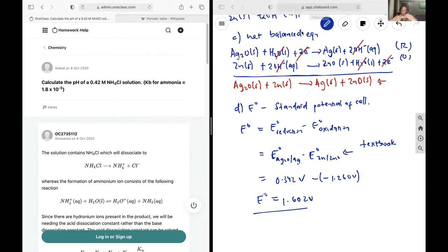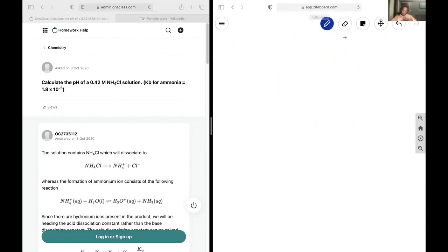Okay, and this is going to be our last question. We'd like to figure out the pH of a 0.42 molar NH4Cl solution. The Kb for ammonia is 1.8 by 10 to the negative 5.